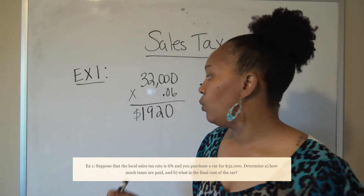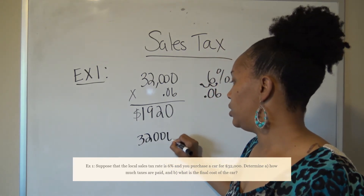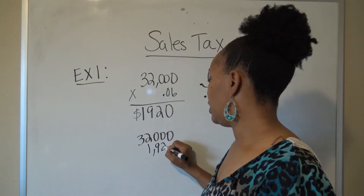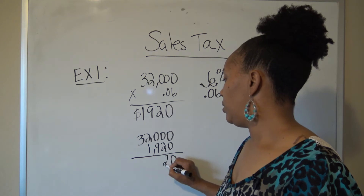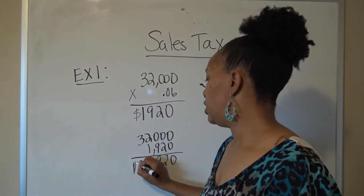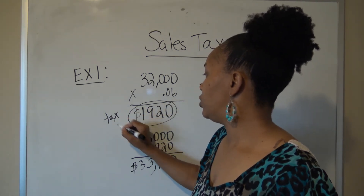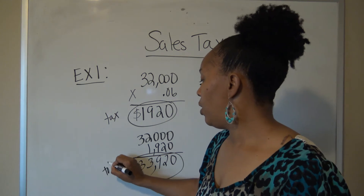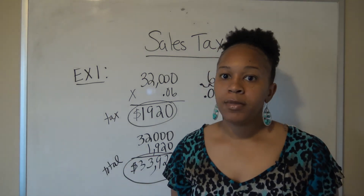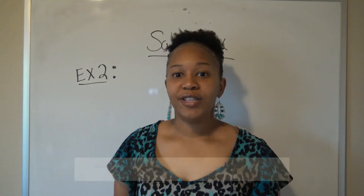Now if you want to find the total price of the car, take the $32,000 and add the taxes to it. The car costs $32,000, and adding the $1,920 in tax gives you $33,920. So the tax amount is $1,920 and the total cost of the car is $33,920.